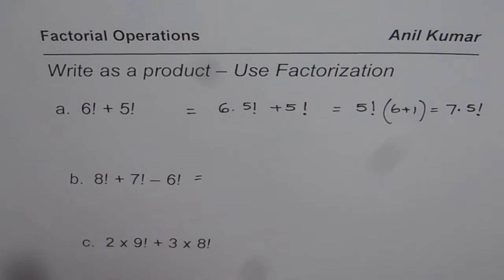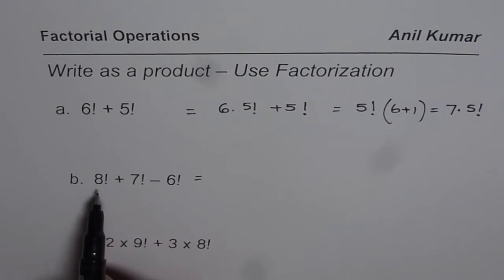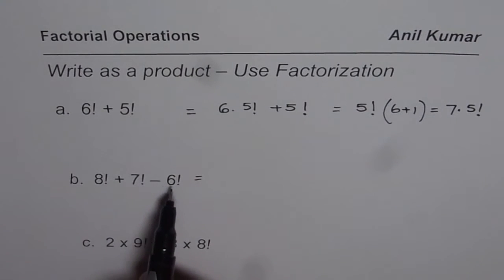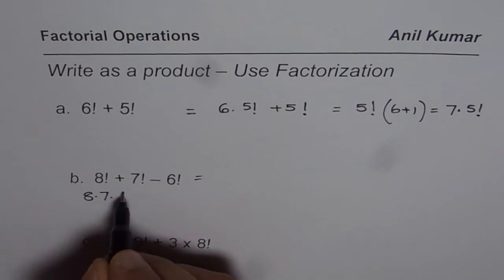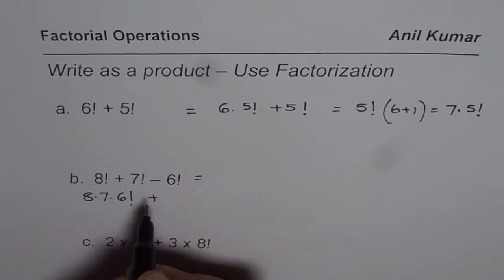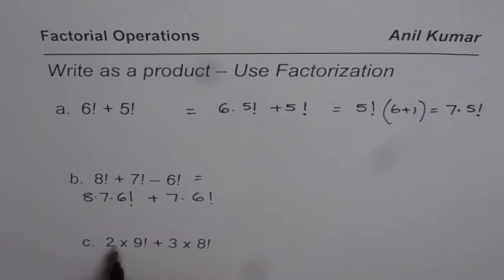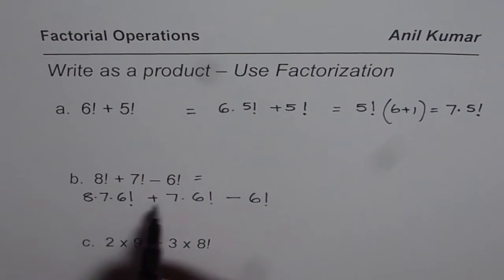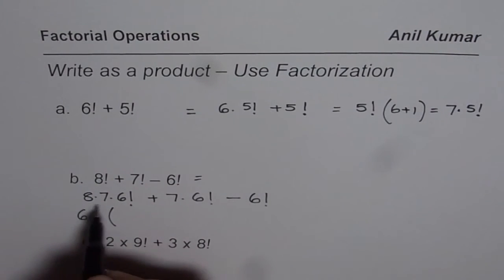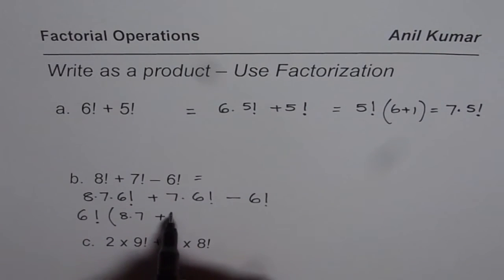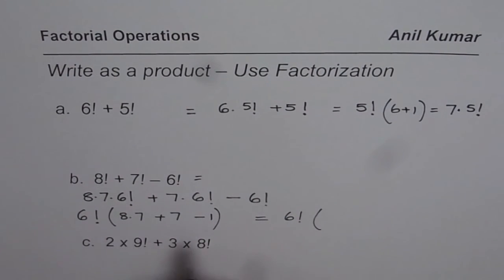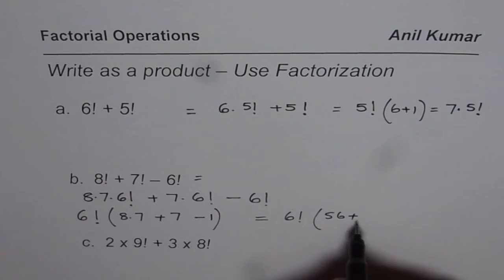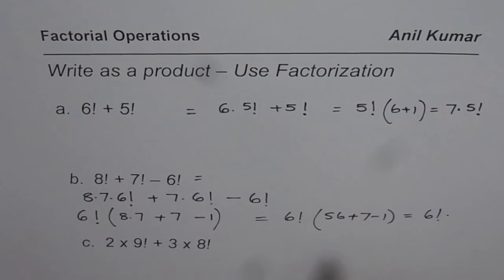Let us do the next one. Here we have 3 terms, and amongst them 6 factorial is the lowest term, so we can factor out 6 factorial. 8 factorial can be written as 8 times 7 times 6 factorial, plus 7 factorial is 7 times 6 factorial, minus 6 factorial. As you can see, 6 factorial is common, so we get 6 factorial times 8 times 7, which is 56 plus 7 minus 1. That gives us 56 plus 6, which is 62. So the answer is 6 factorial times 62.